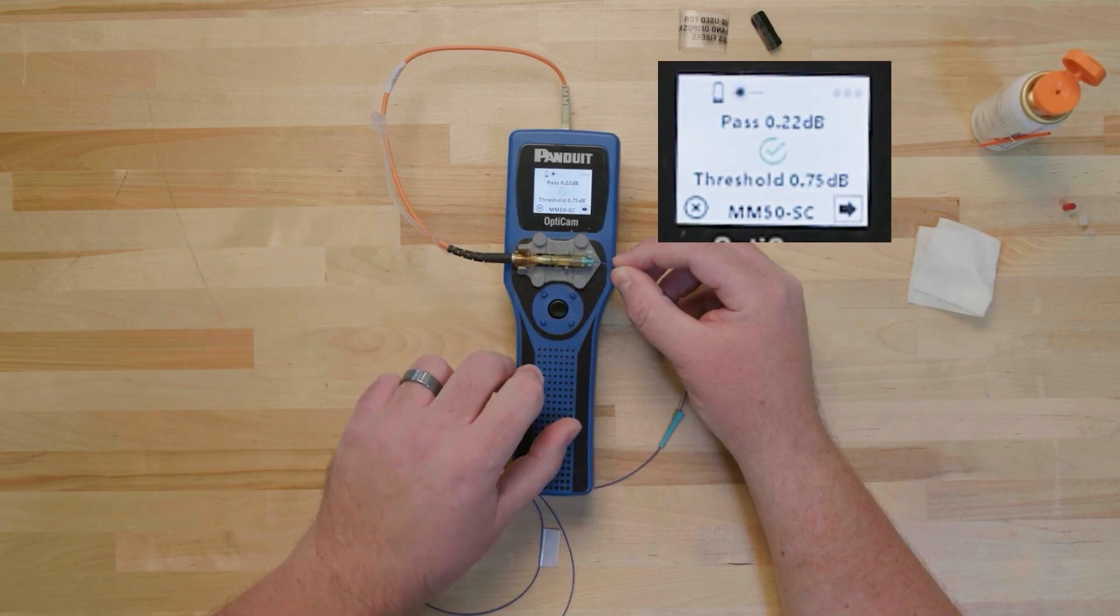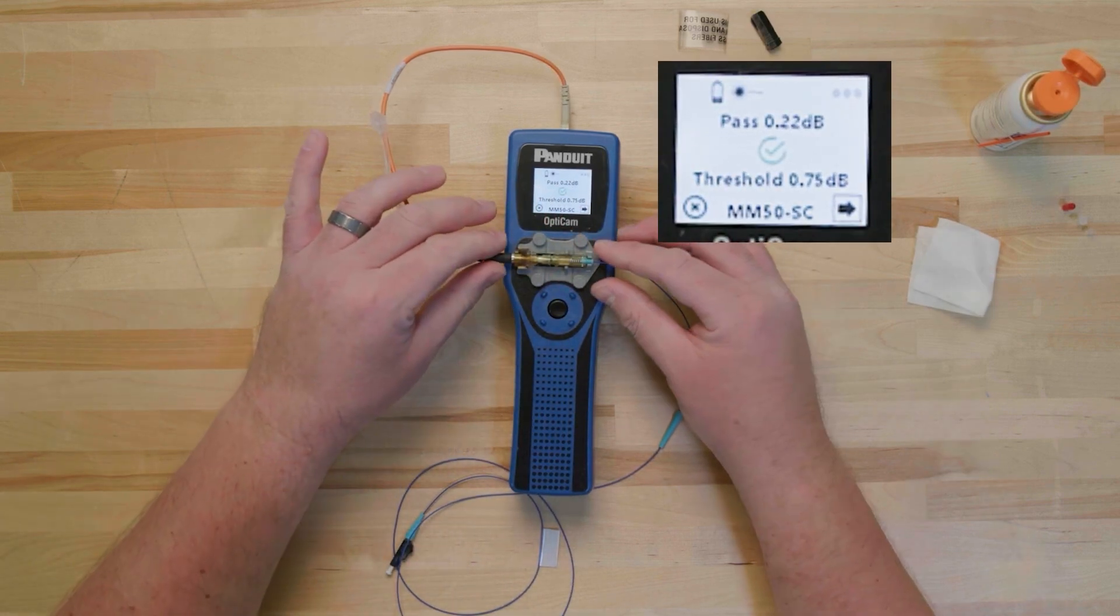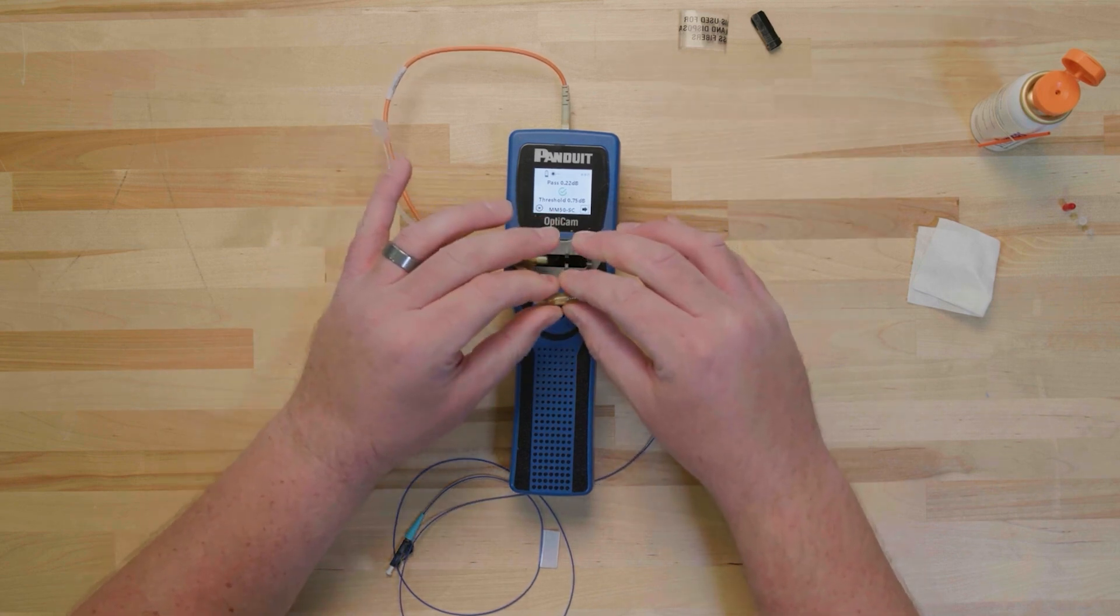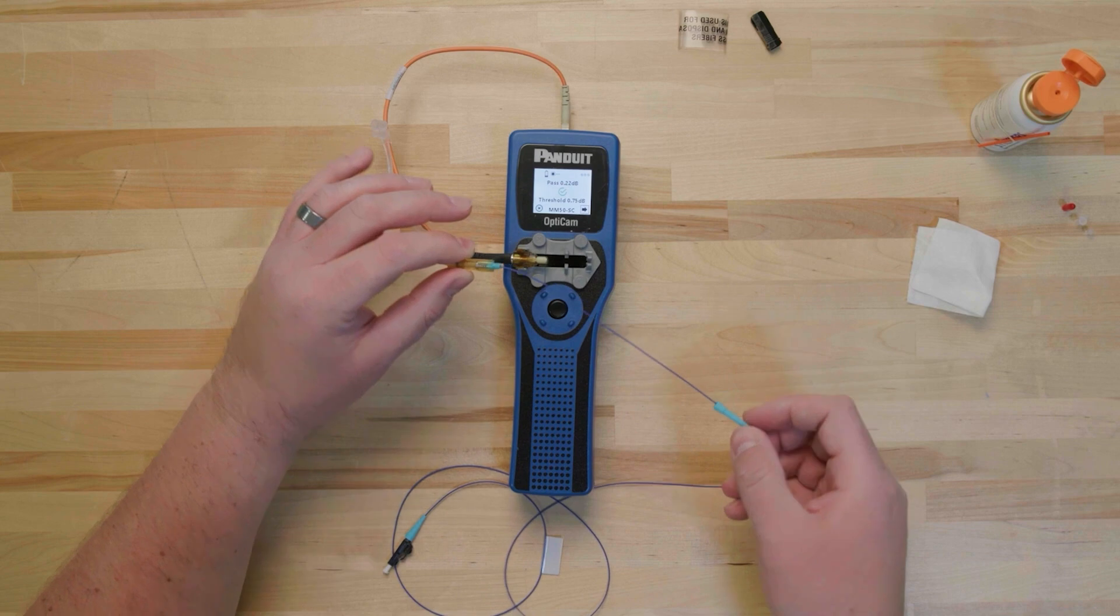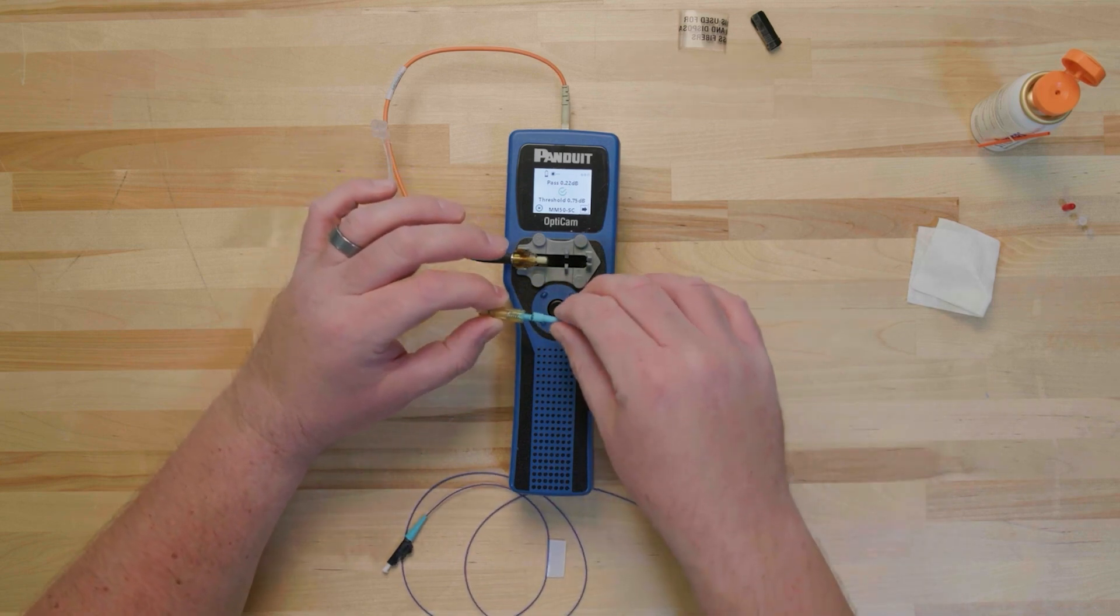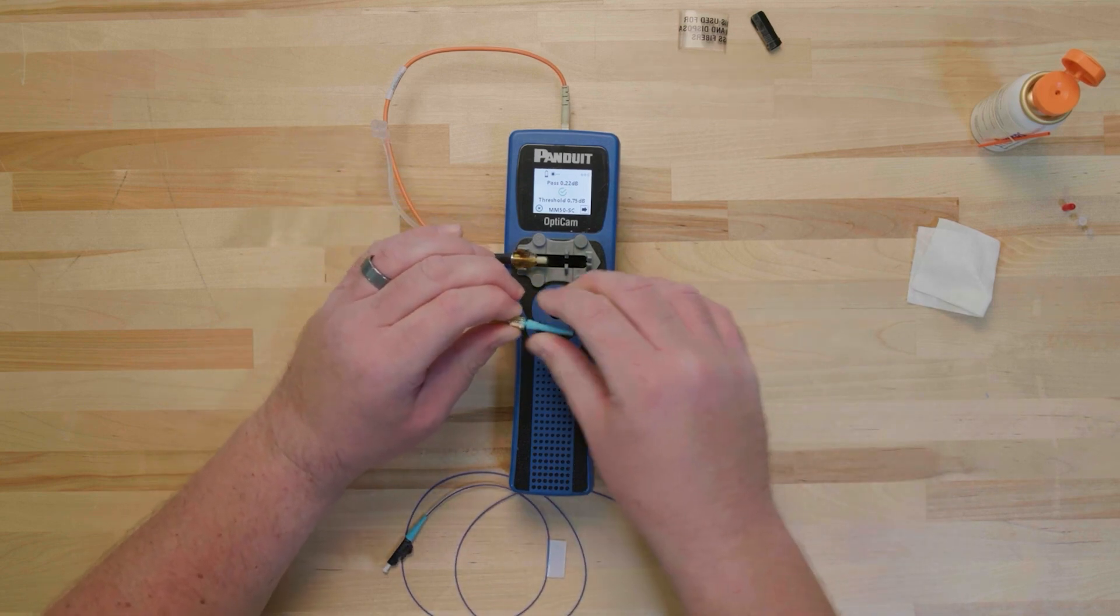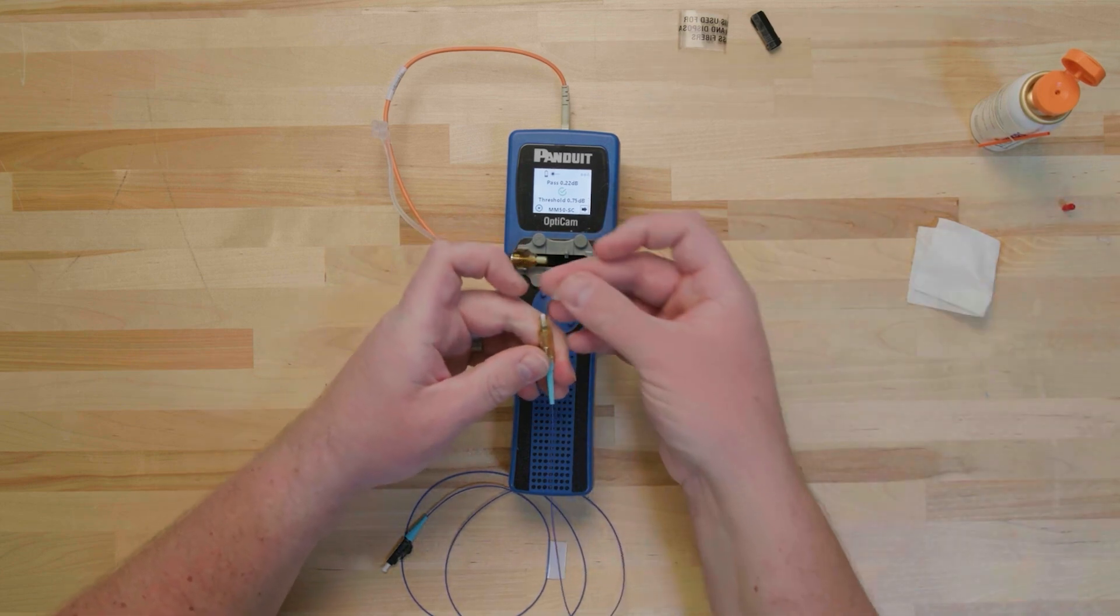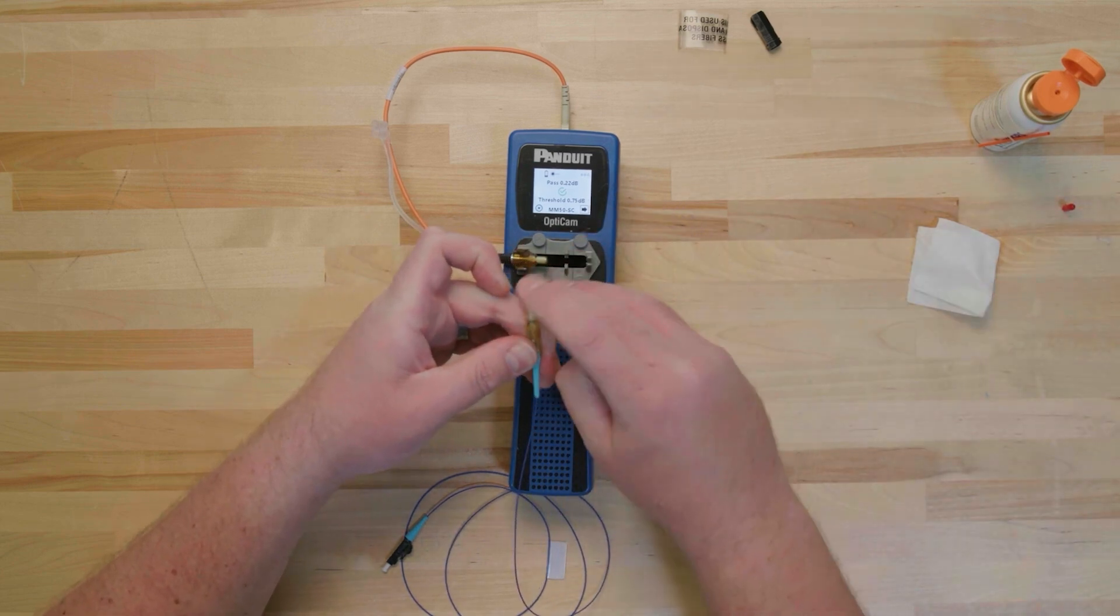Once the connector has achieved a satisfactory result on the calculated insertion loss, cam and remove the connector from the cradle and adapter by gently pulling up on the rear of the connector. Once the connector is removed from the tool, immediately replace the dust cap on the ferrule, then slide the boot up onto the connector.